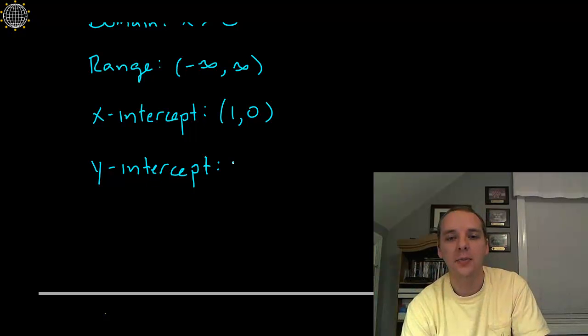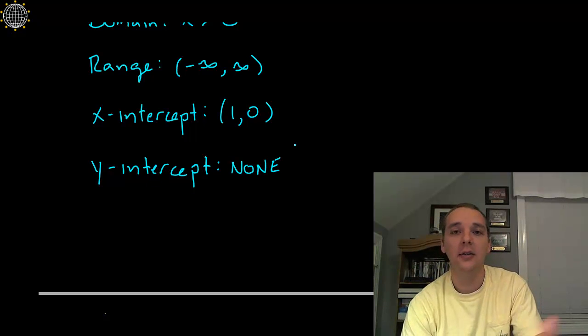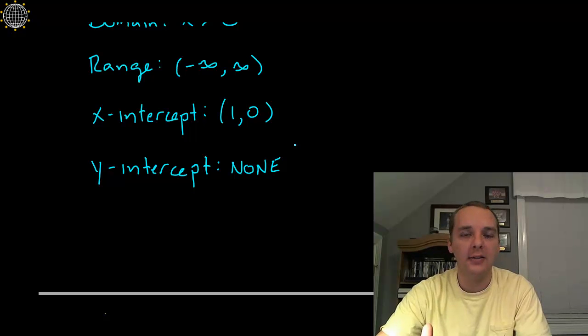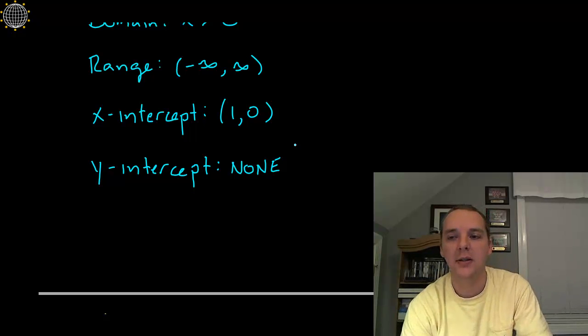Now the y-intercept: there's not going to be one. As we said, it doesn't touch the y-axis, and there's a good reason for that. The exponential function e^x never touched the x-axis, and so we would expect this to happen.